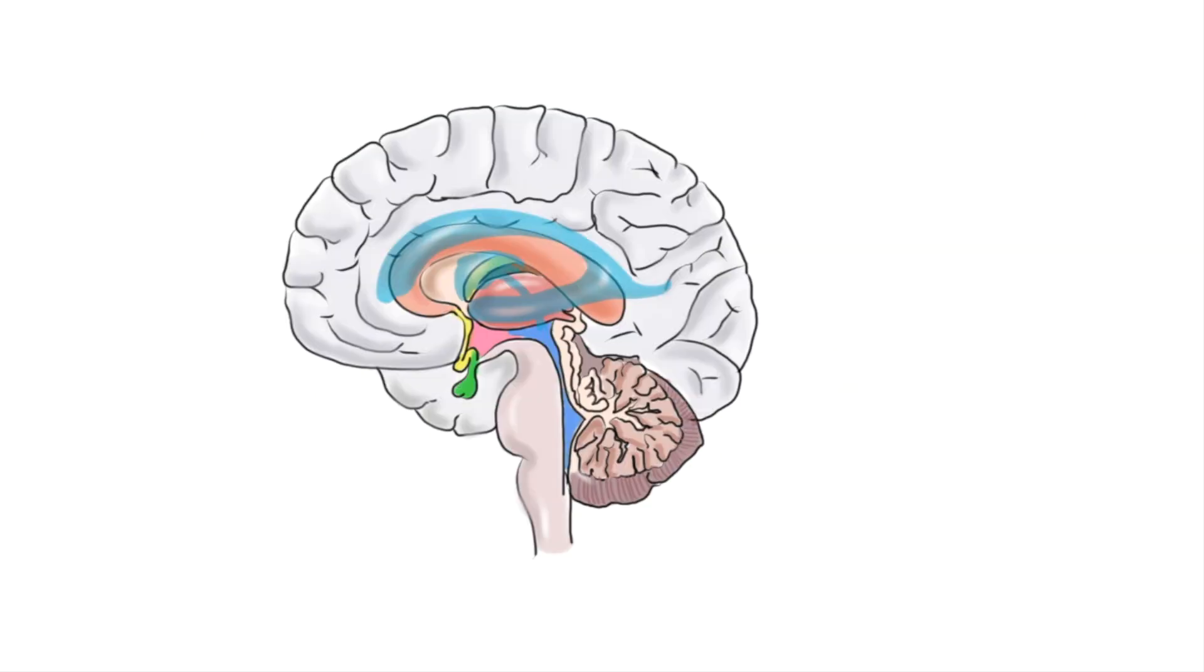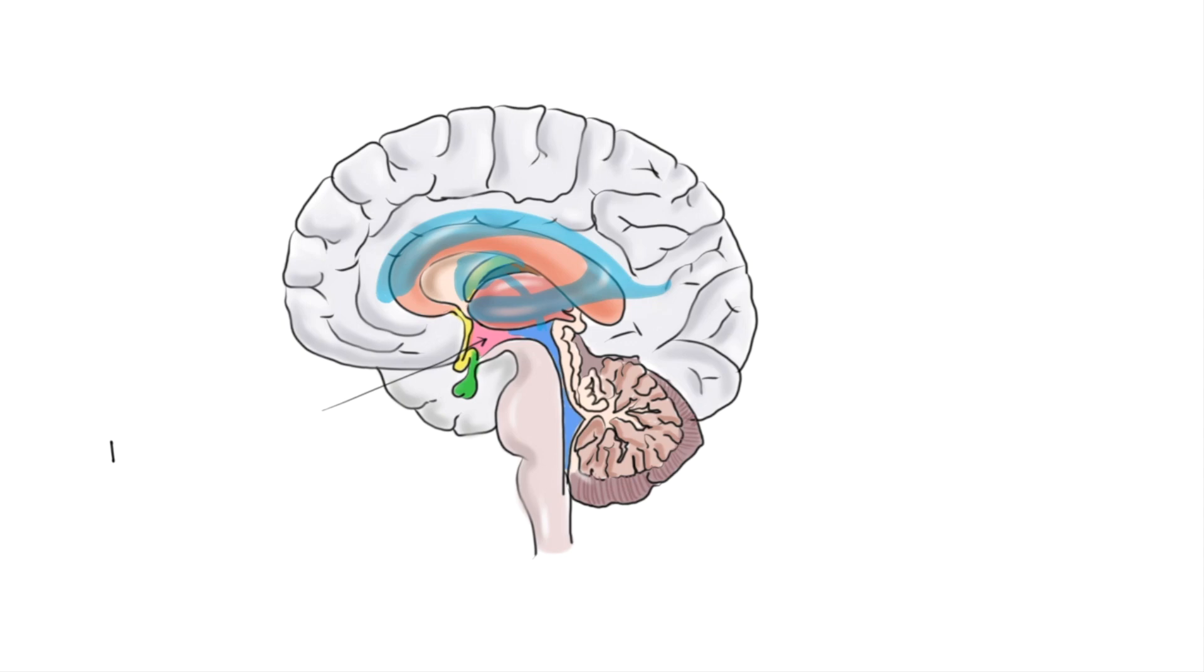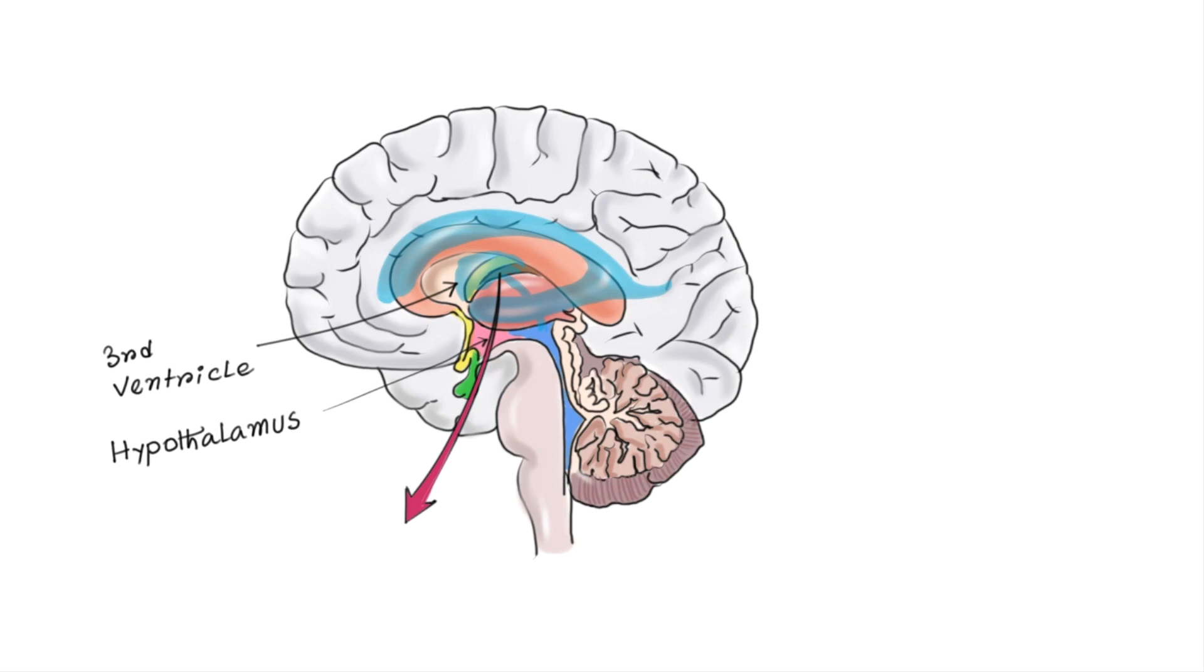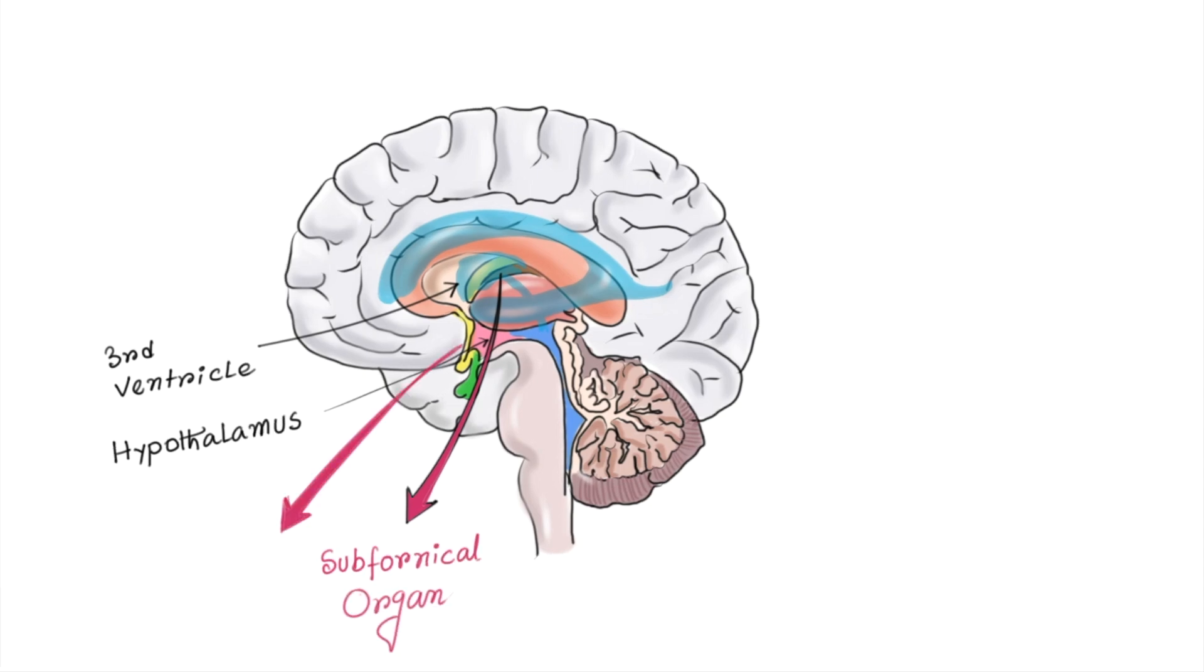Let's see how this whole system works. You must be knowing about osmoreceptors. Here this is hypothalamus and this is third ventricle. Anterolateral area of third ventricle having some osmoreceptors which can sense osmolarity of the blood. Two such specialized structures are sub-fornical organ and organum vasculosum.